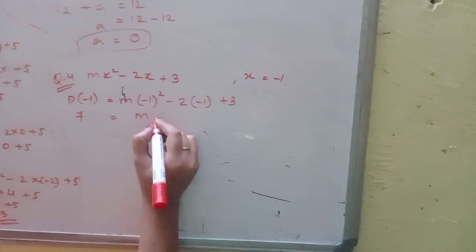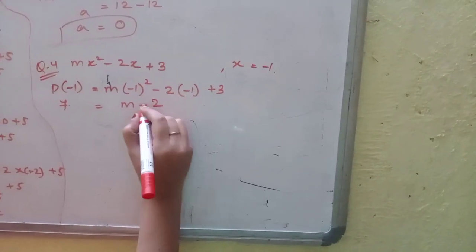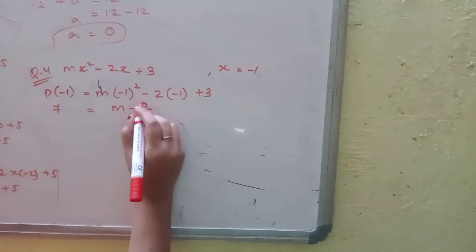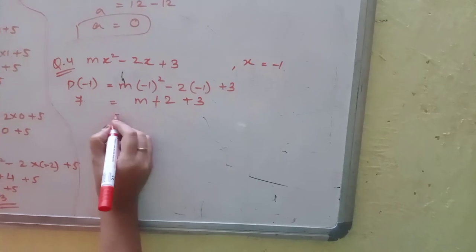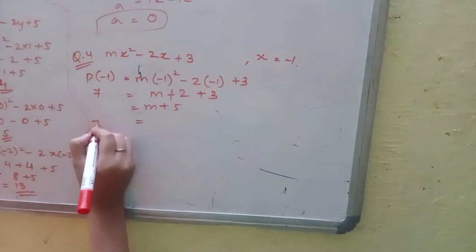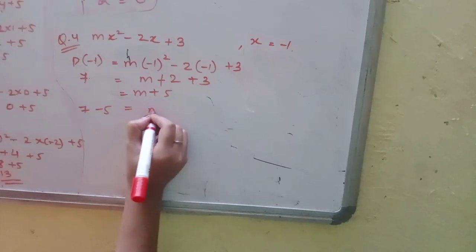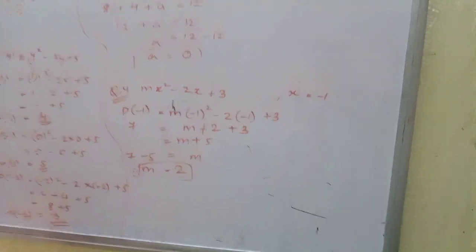m stays as m, minus minus is plus 2 plus 3. m + 5 = 7. m = 7 - 5 = 2. M ki value 2 hai.